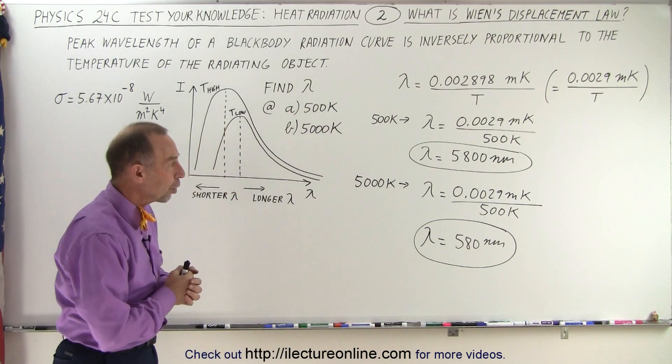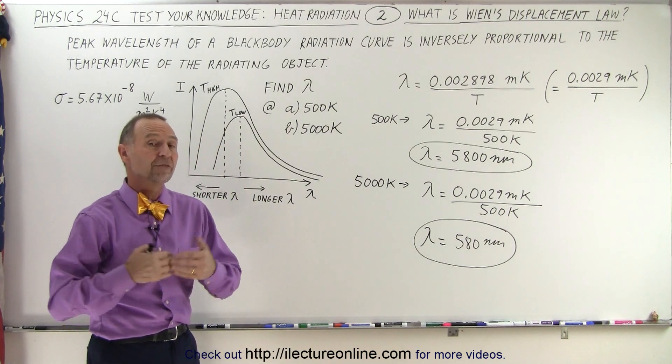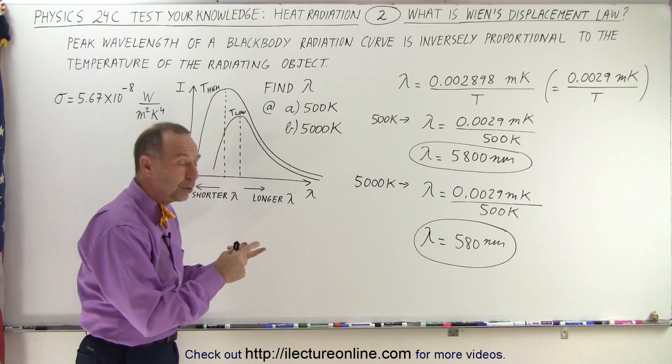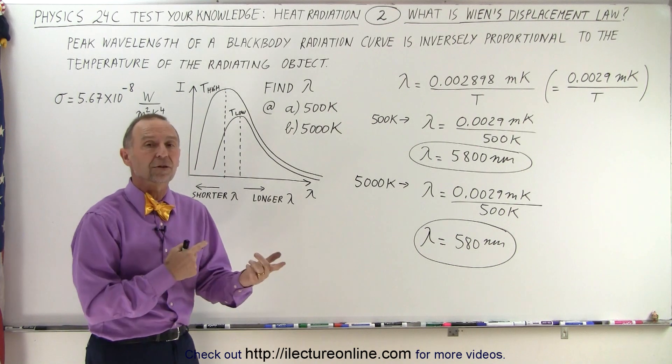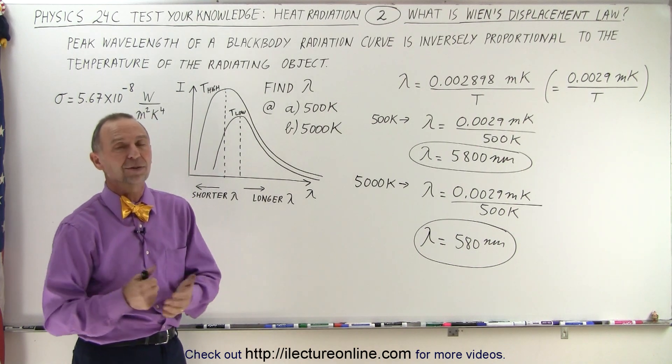But notice that is what we call Wien's Displacement Law, very useful, because that way if we know either the temperature or the wavelength of the radiated energy, we can then figure out the other component, and that is how it's done.